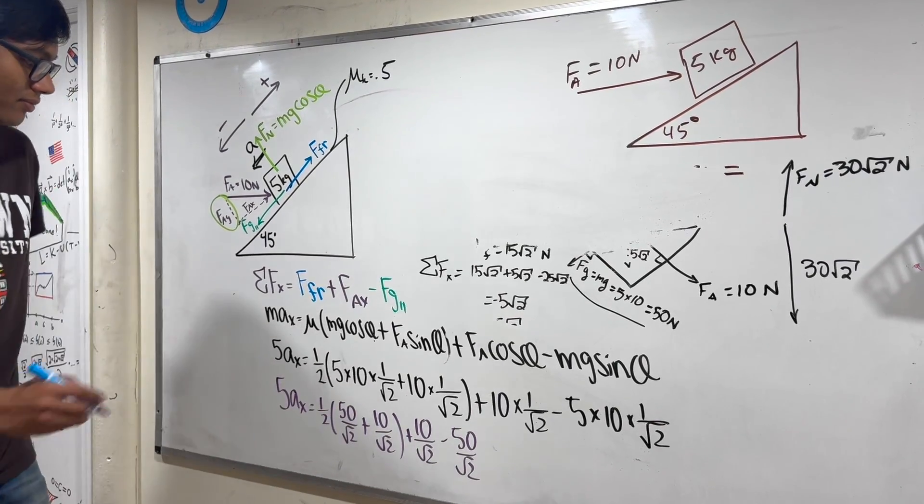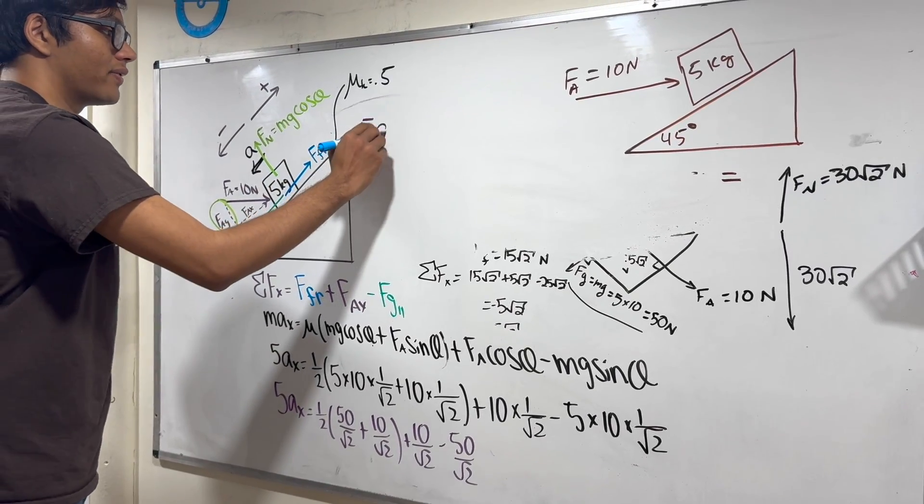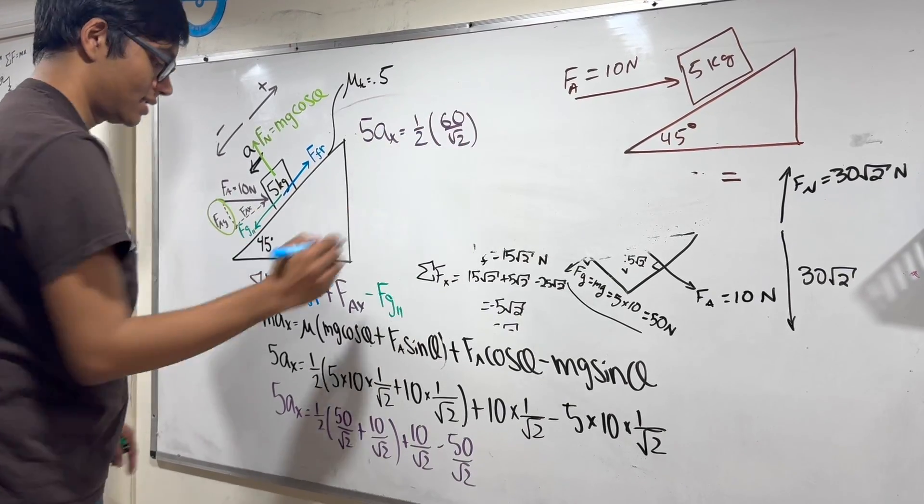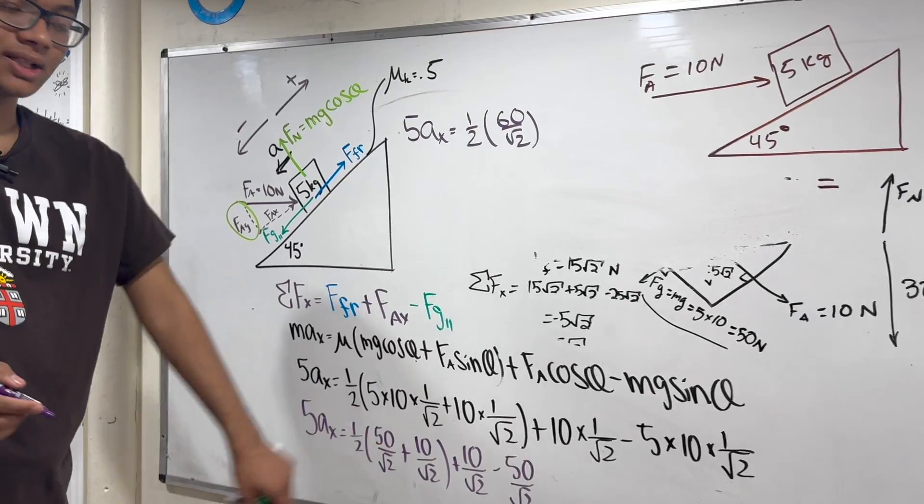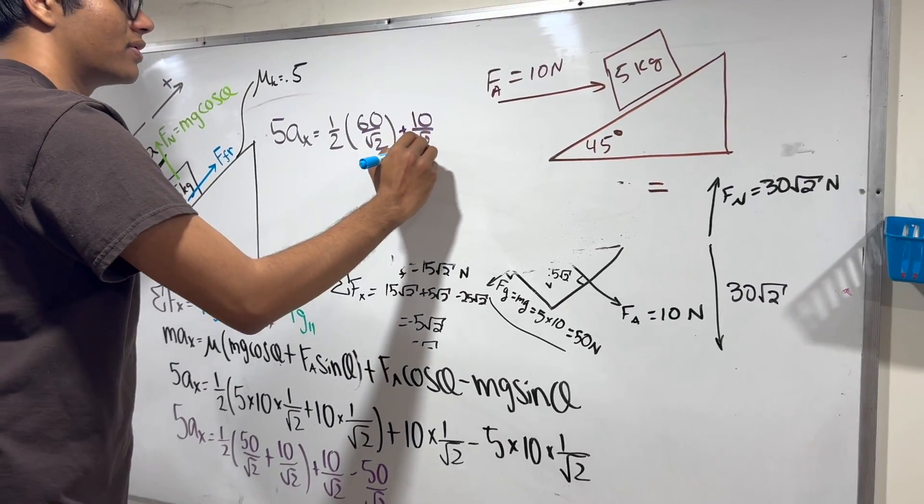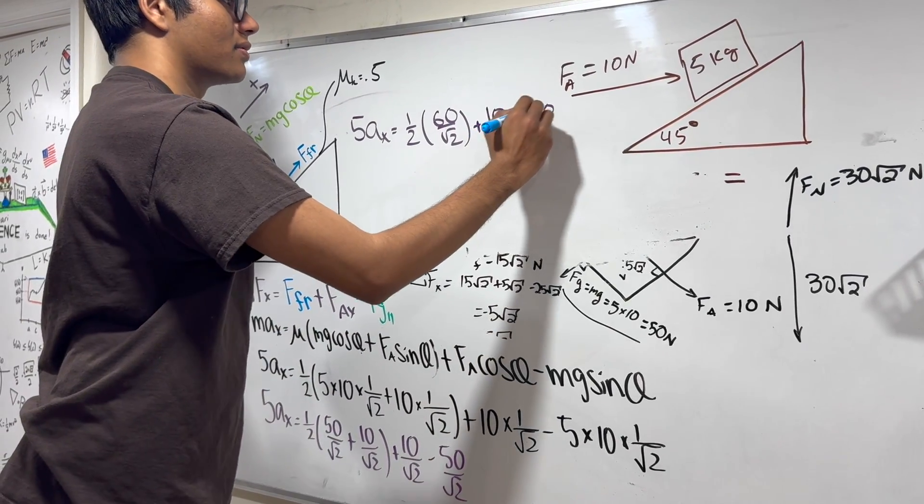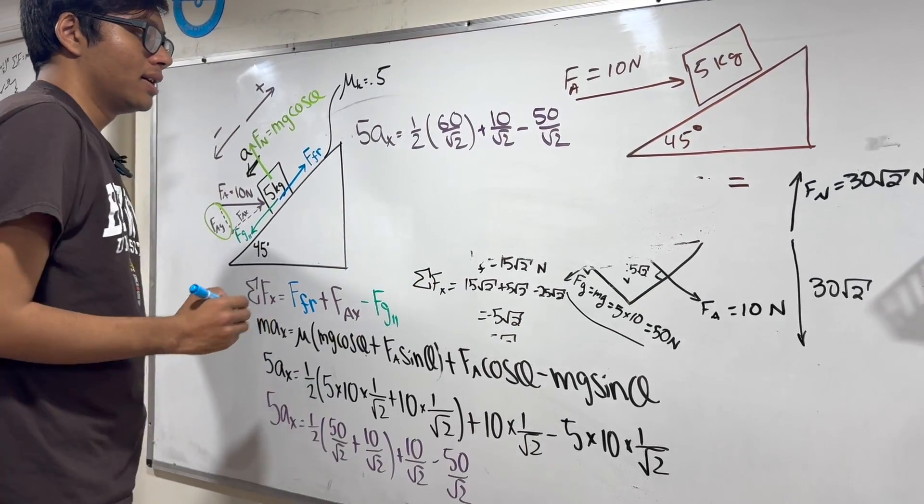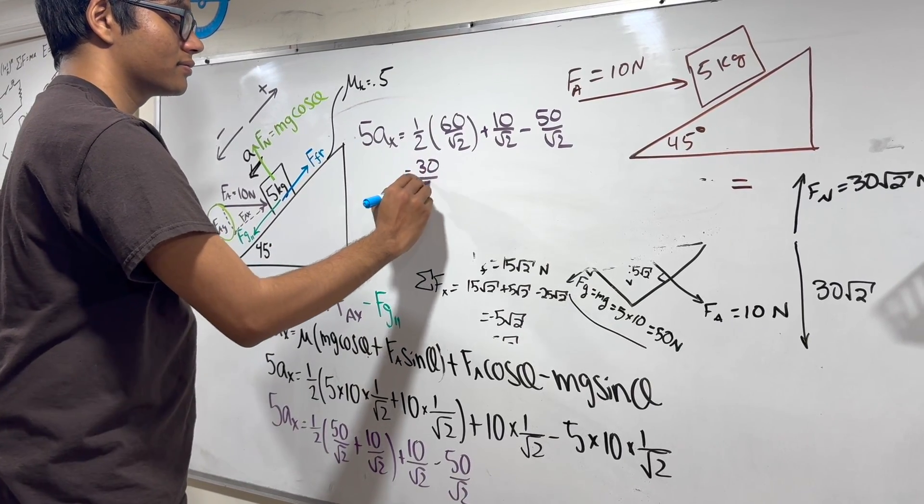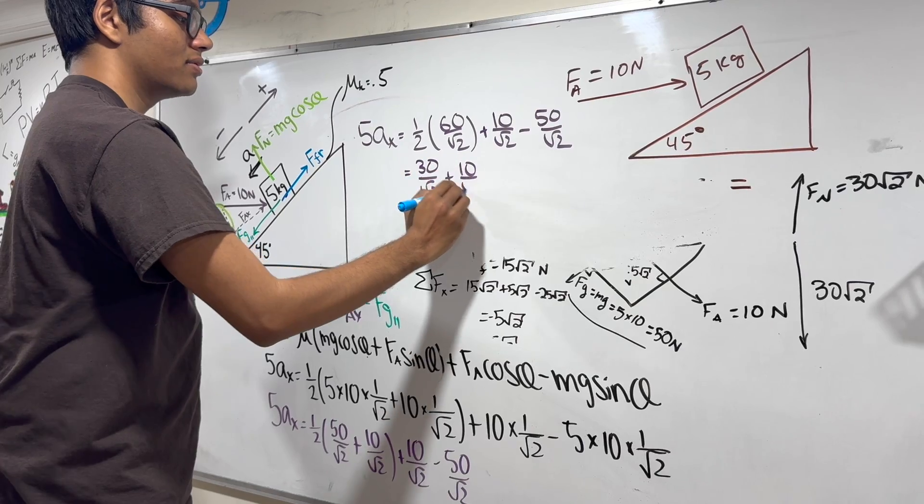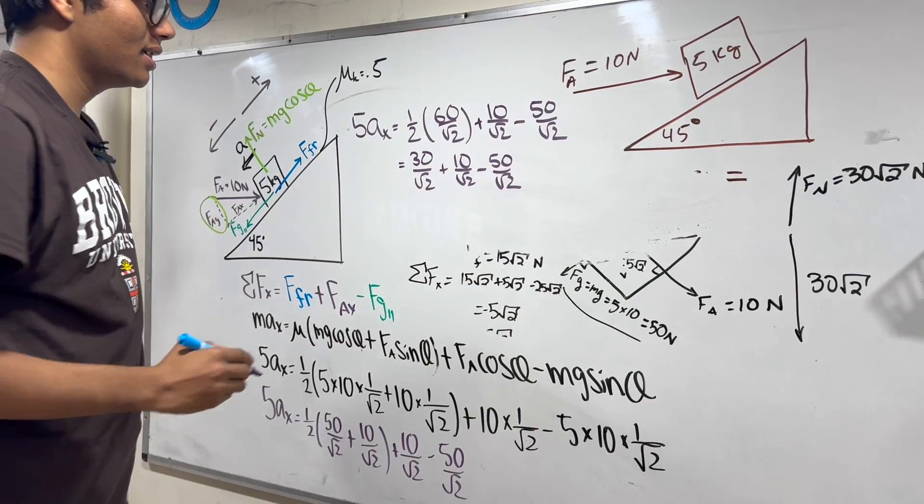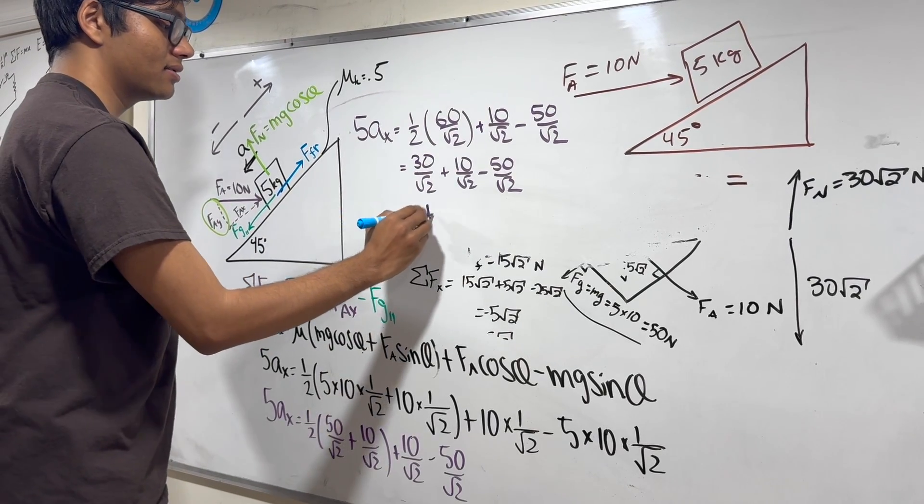Inside the parentheses we have 5Ax equal to 1 half, 60 over the square root of 2—60 is because 50 plus 10—plus 10 over the square root of 2 minus 50 over the square root of 2. Half of 60 is 30 plus 10 over the square root of 2 minus 50 over the square root of 2. 30 plus 10 is 40 minus 50 is minus 10 over the square root of 2.